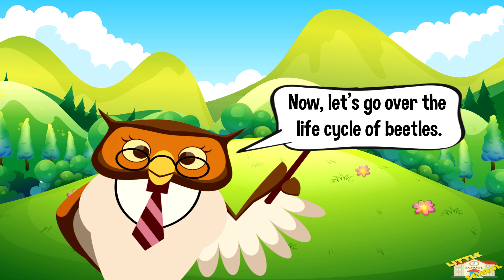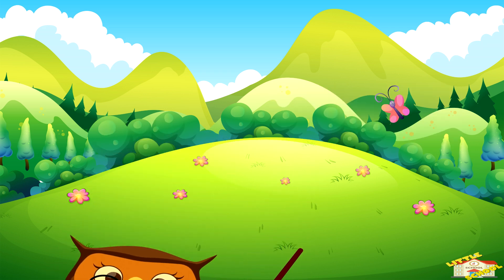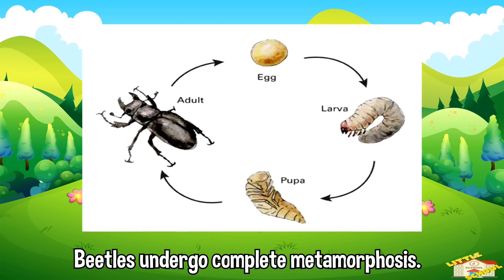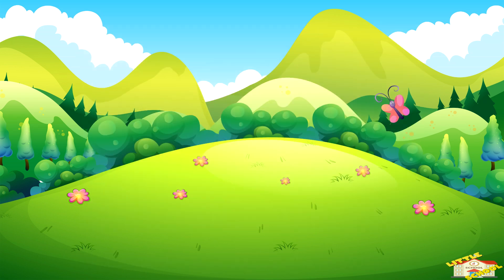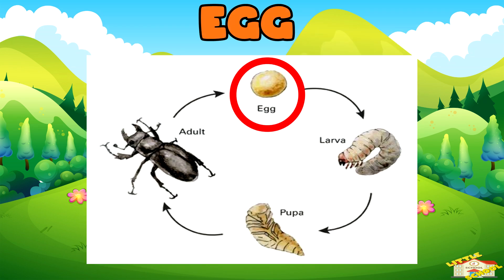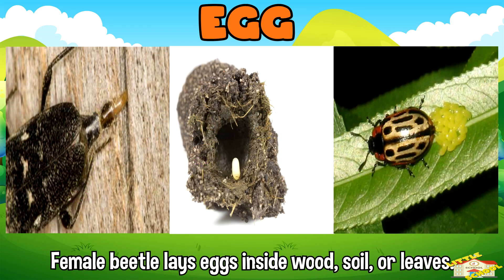Now let's go over the life cycle of beetles. Beetles undergo complete metamorphosis, which includes four stages. Egg: the female beetle lays eggs, often in a protected environment like inside wood, soil, or leaves.